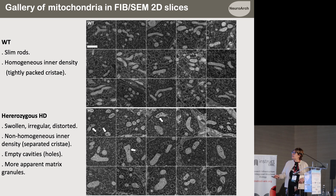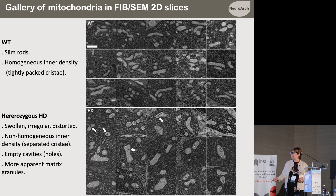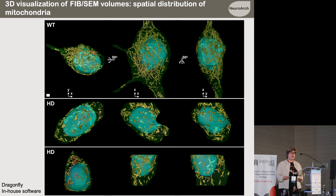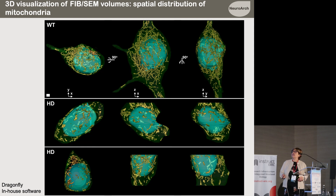In the HD neurons, we can see that mitochondria are swollen and irregular. They are no longer homogeneous, and we can distinguish the cristae because they are separated. They also have empty cavities in the matrix, and it appears that matrix granules are more apparent in HD mitochondria. If we want to have a full picture of the mitochondrial network, we need to go to 3D visualizations.